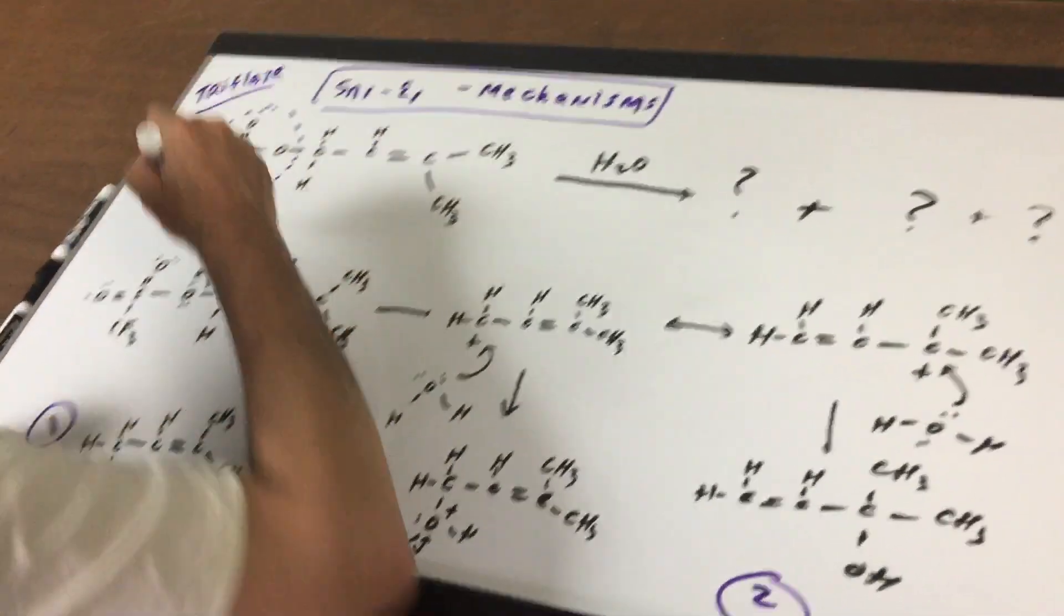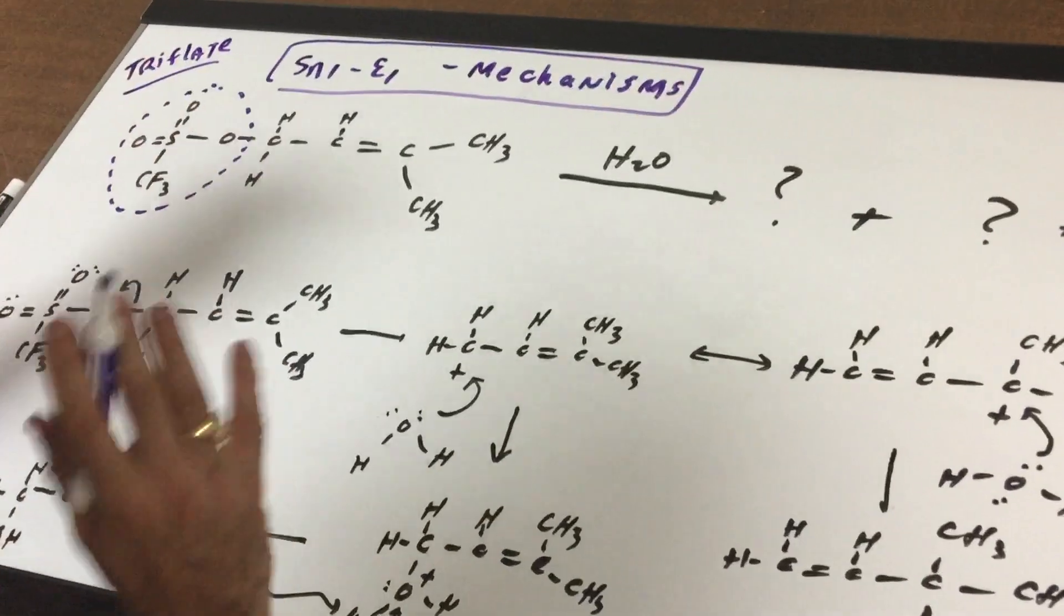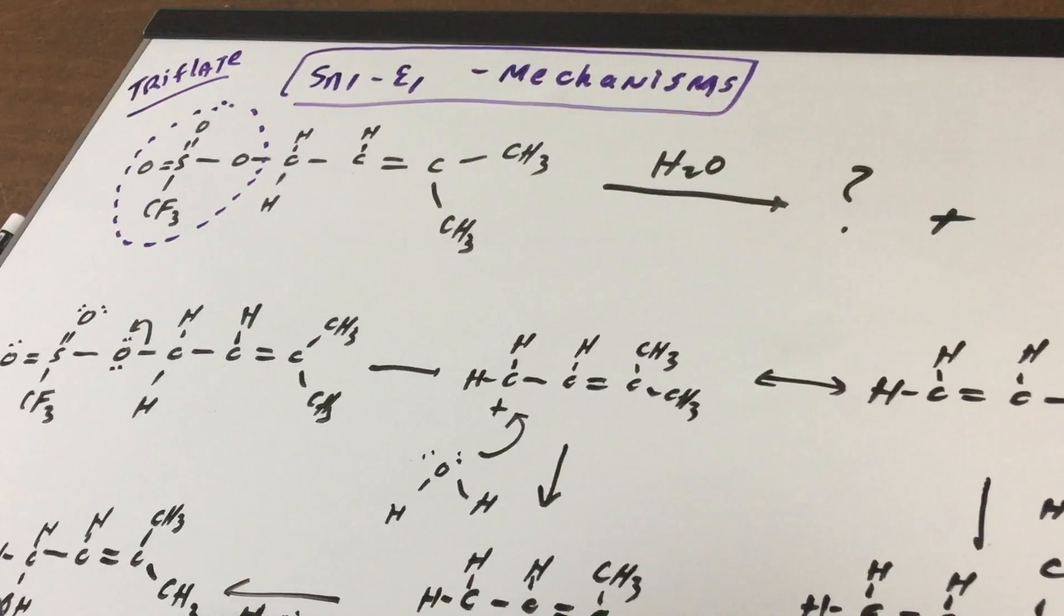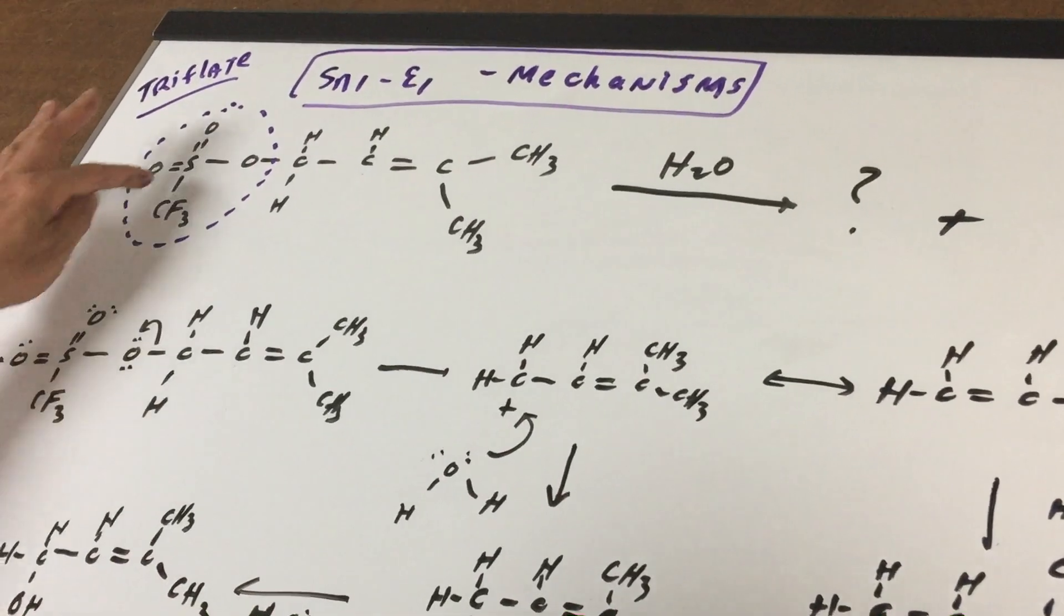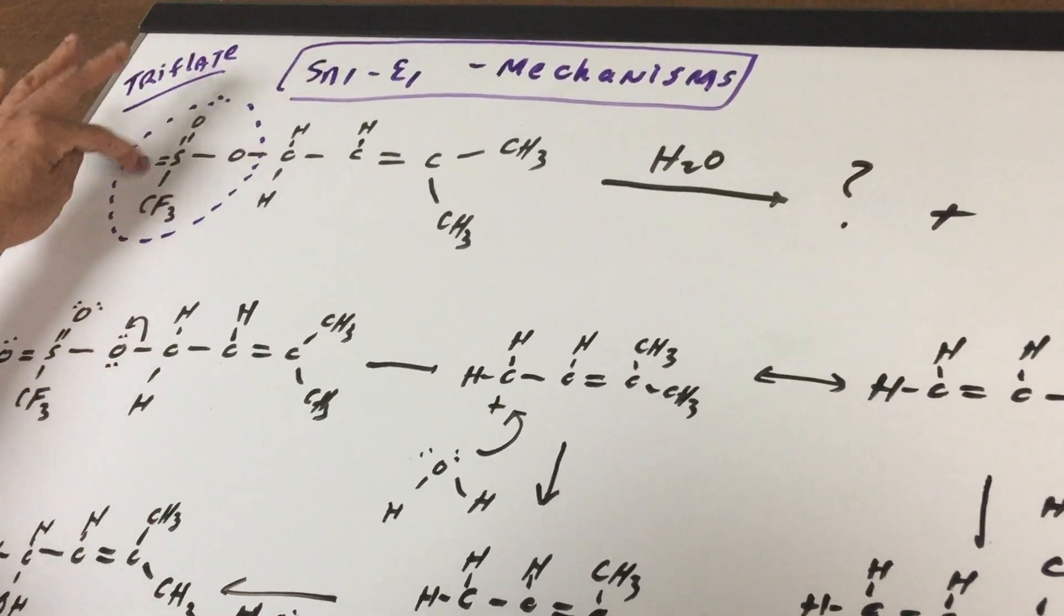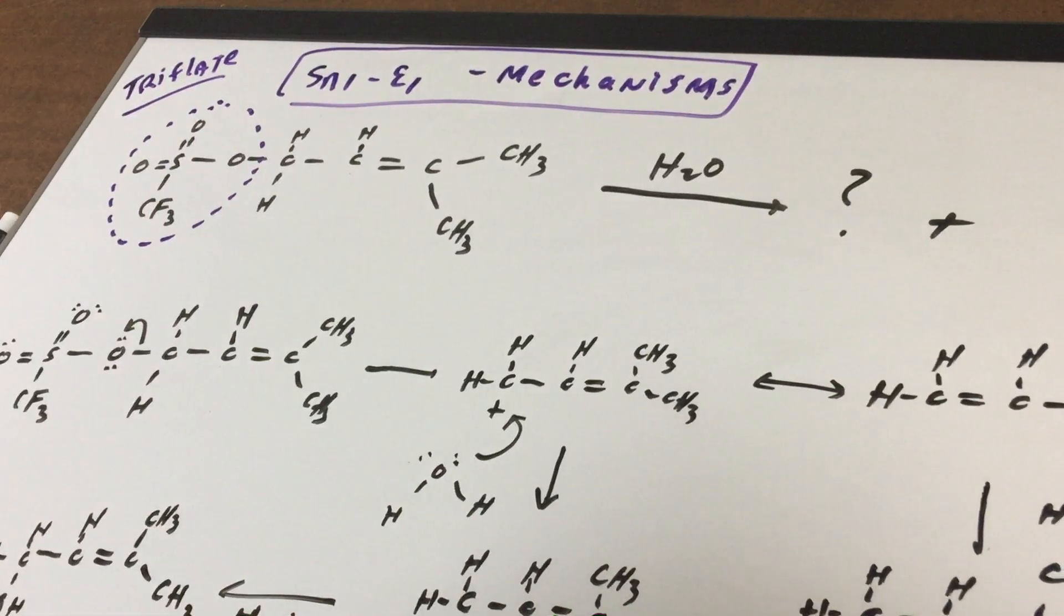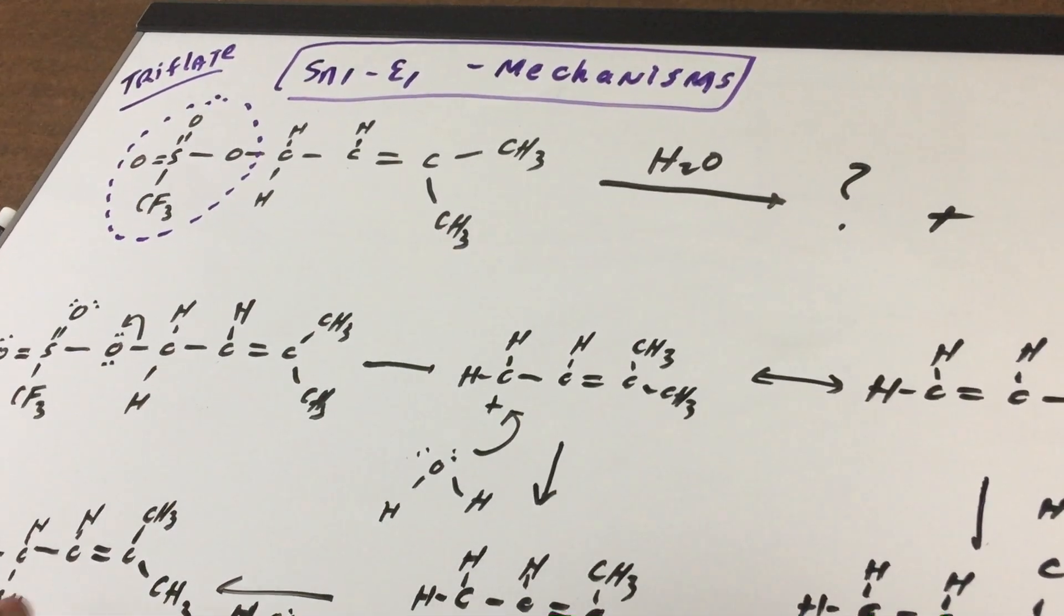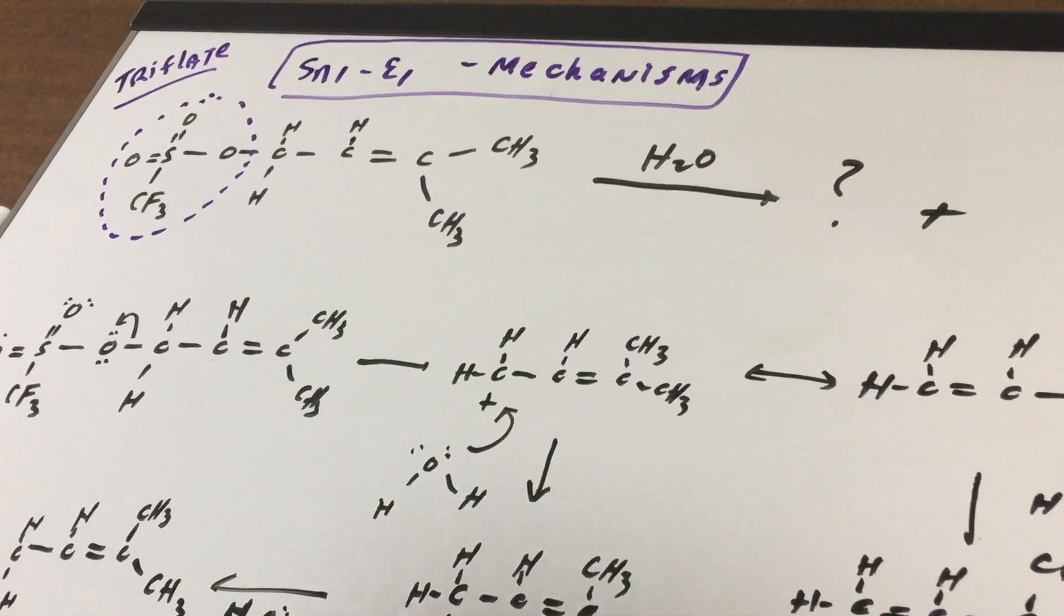The minute you see an S and O's, that means it's going to be a great leaving group. A great leaving group is one that can be stabilized. So, if this does leave, you would get an enormous amount of resonance stabilization. The bottom line is it's a great, great leaving group, even better than Tos.